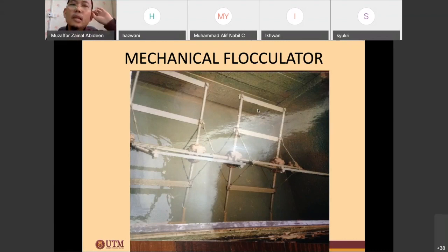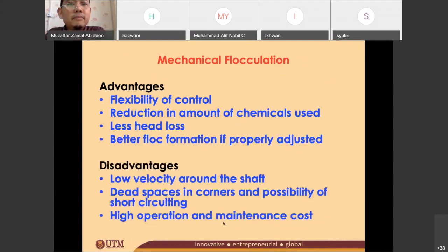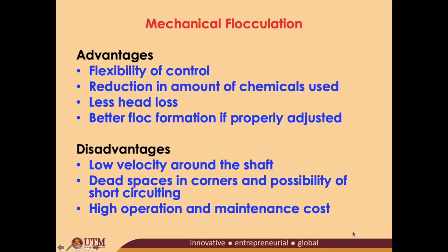These are the advantages of the mechanical flocculator. Flexibility and control is quite straightforward. There is a reduction in the amount of chemical used — when you have flexibility you can always reduce chemical use. The next advantage is less head loss. Compared to the hydraulic flocculator, which has greater head loss due to friction between the water and the baffles, the mechanical flocculator performs better. With flexibility in control you can also control the amount of chemicals, allowing you to form better flocs.